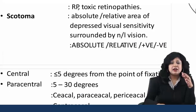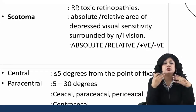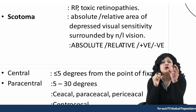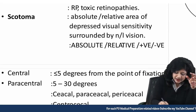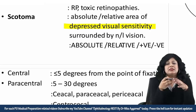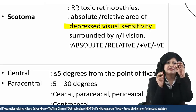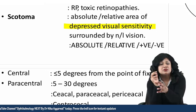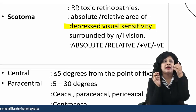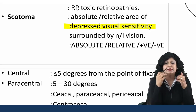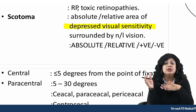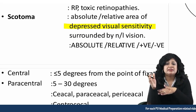We can also have scotomas. Scotoma means areas of decreased sensitivity — wherever I have decreased visual sensitivity, that is called a scotoma. This scotoma can be a central scotoma, it can be a paracentral scotoma, it can be a ring scotoma, it can be a relative scotoma, or it can be an absolute scotoma. We have got various types of scotomas.